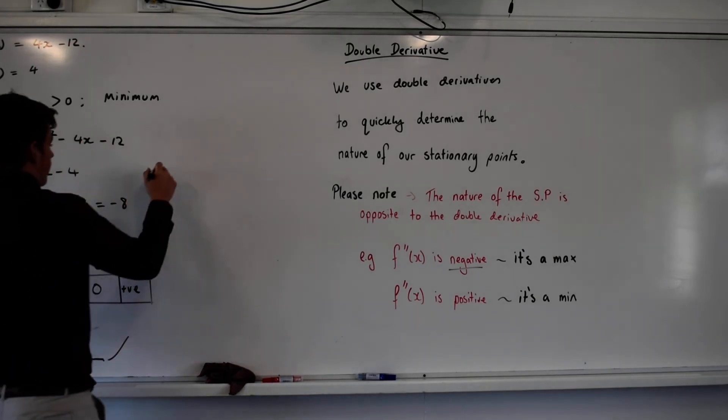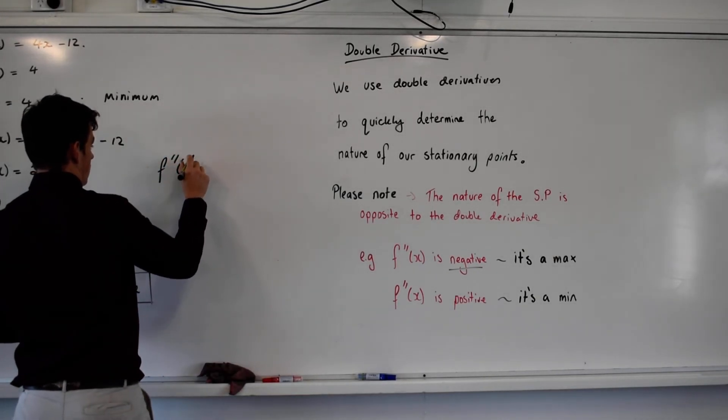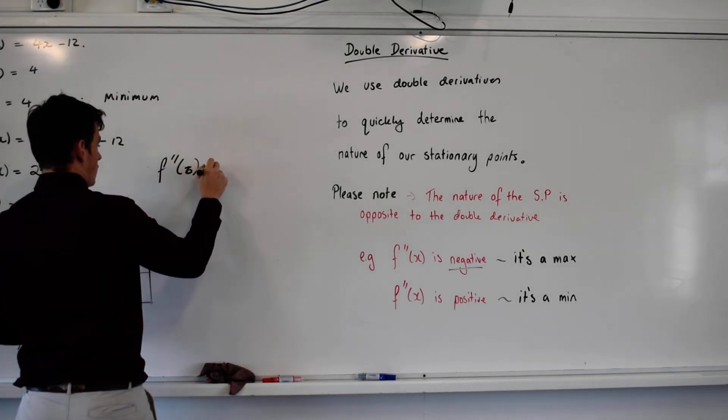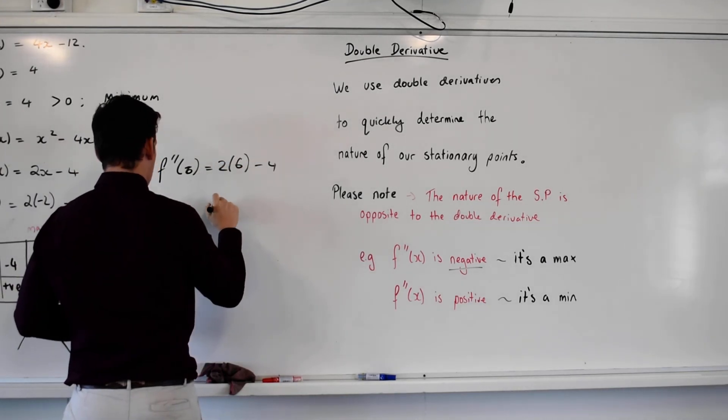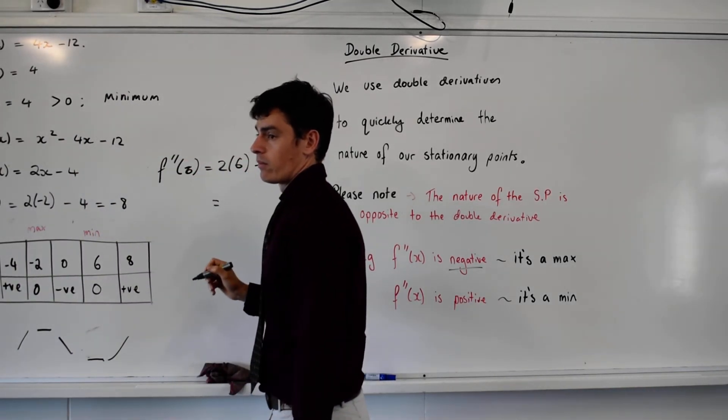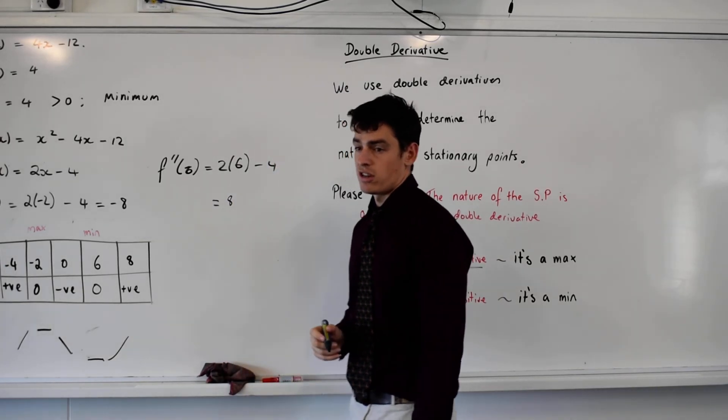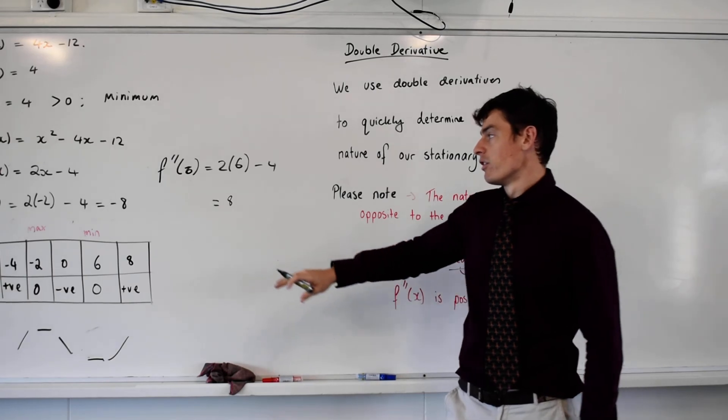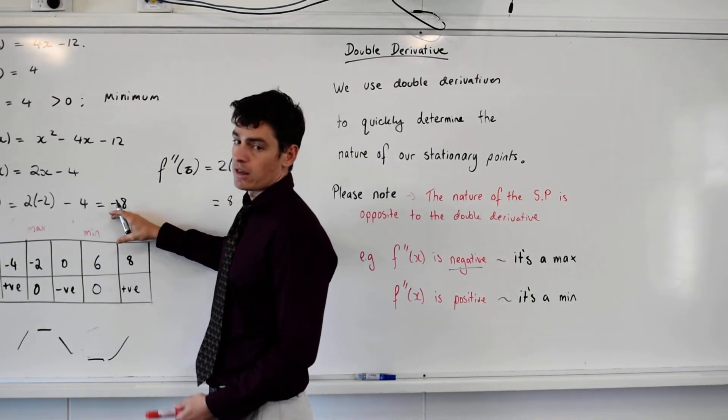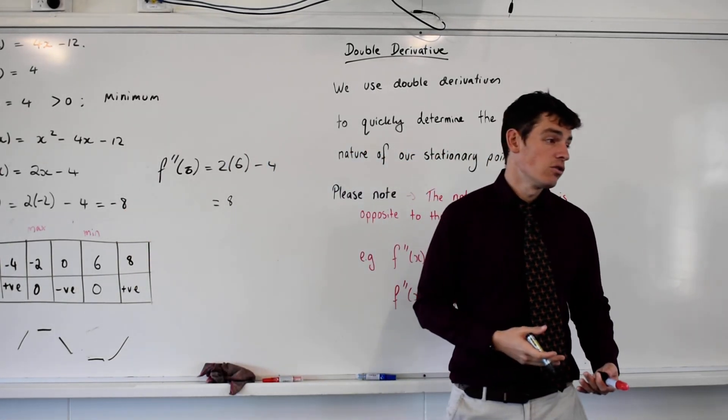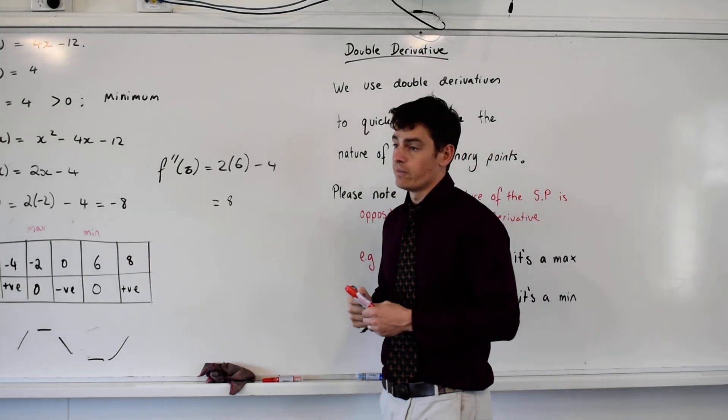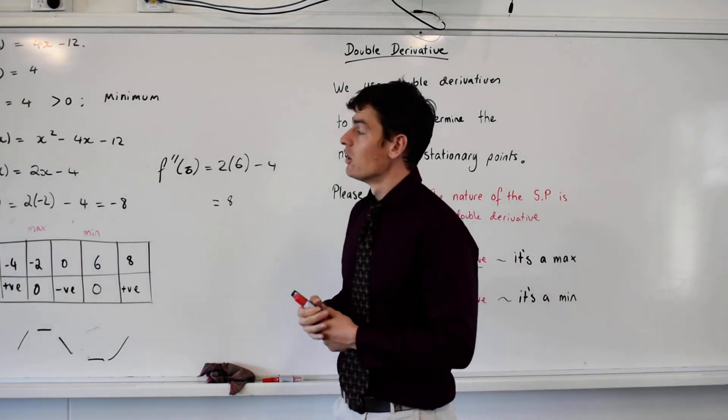Now, if I do the same for 6, I get 2 by 6 minus 4, which is positive 8. Which tells me it's a minimum. I don't care about the size of the number. All I care about is whether it's negative or positive. Cool? Does that make sense? Sure it does.